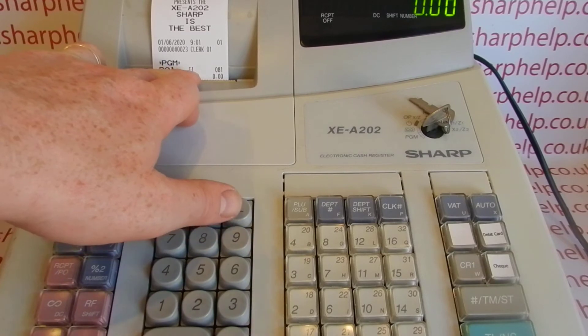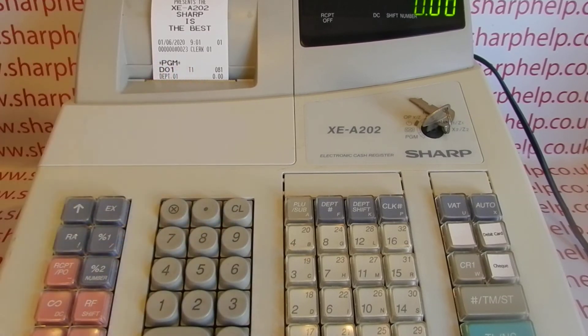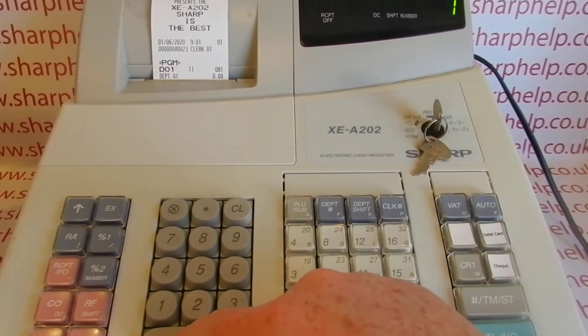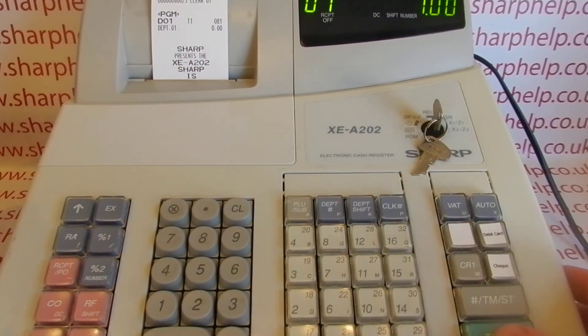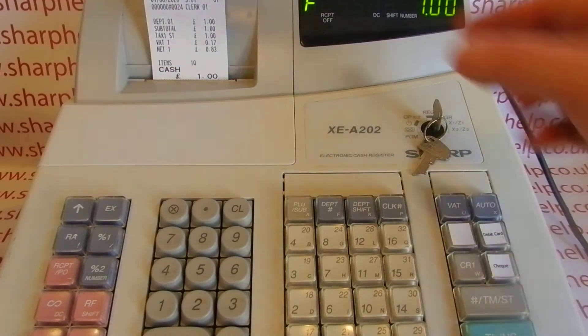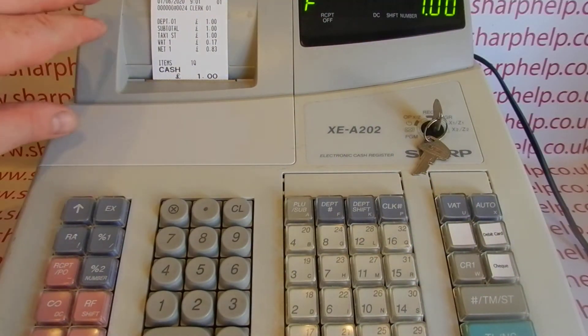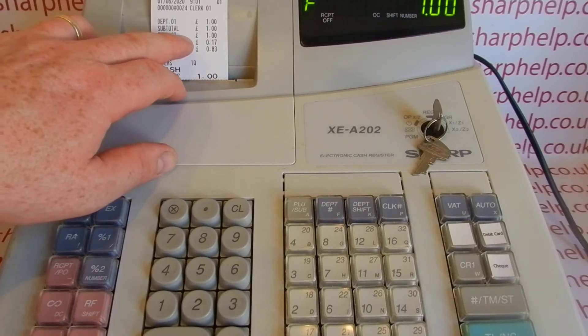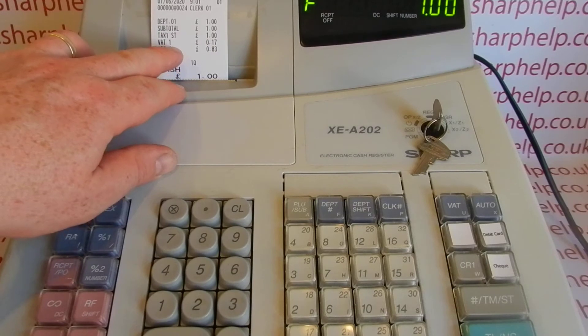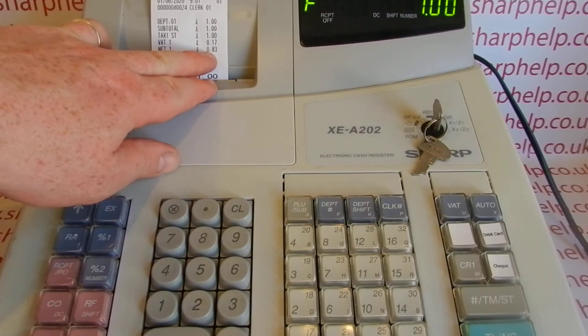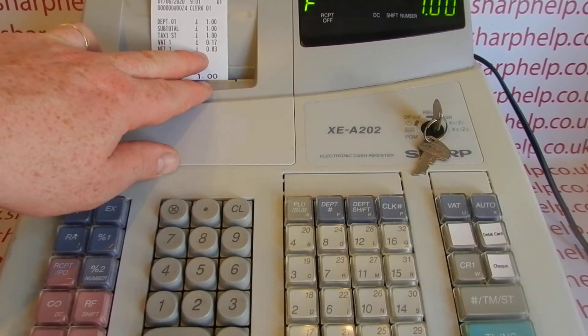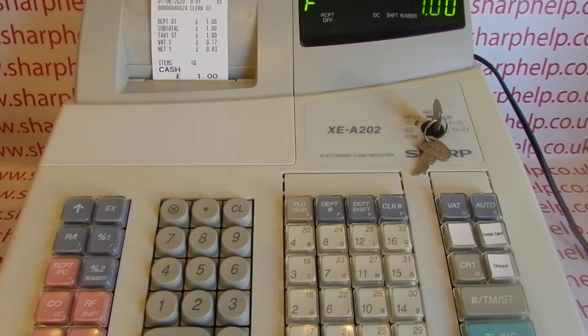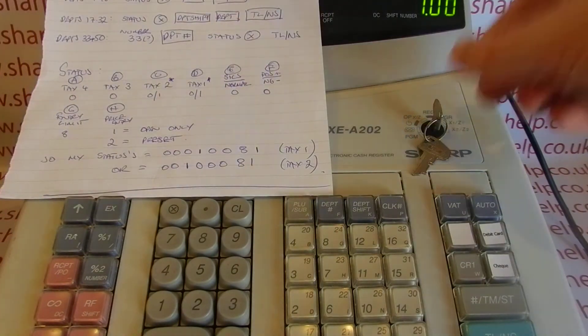We'll get a little printout saying department 1, tax rate 1. We can actually prove the point if we just very quickly turn the key around to the REG position and pop one pound through department 1, cash that off. We're now getting some tax information here on the receipt. You can probably see that it's one pound. Because my tax here is set to be inclusive, the one pound is the total. So I've got 83p net, 17p VAT. So if you add 20% on to 83p, you get to your pound. So that's worked correctly.